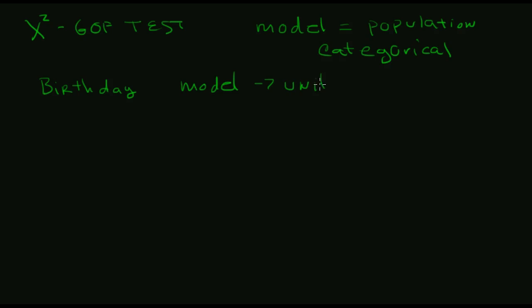Okay, so what we're looking at here today is what we're going to call a chi-squared goodness-of-fit test. And the idea here is to see whether or not our model aligns with the actual population that we're studying. This is about a categorical data point. So what I'm going to use as an example for this is going to be birthdays.